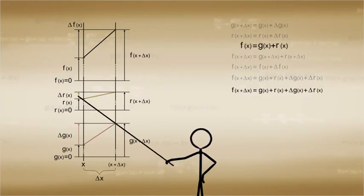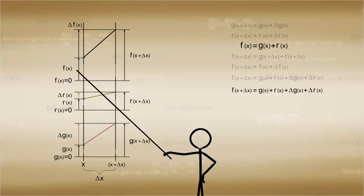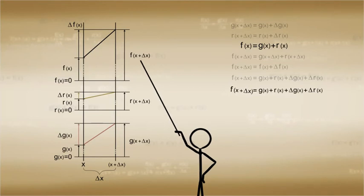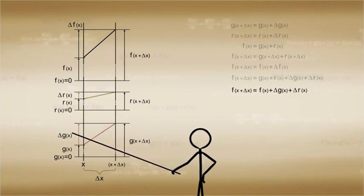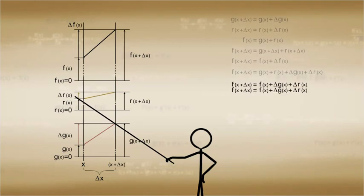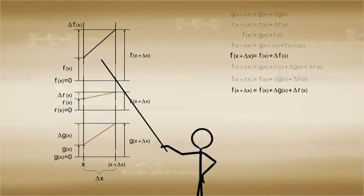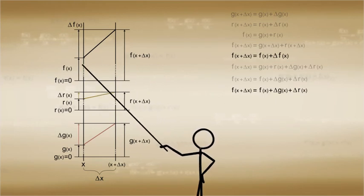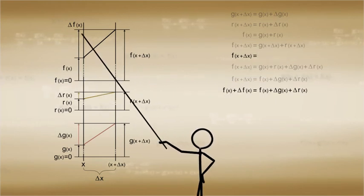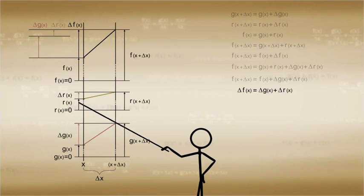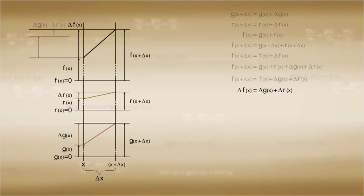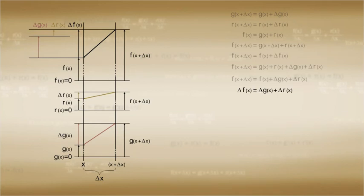Since we know that g of x plus r of x is actually equal to f of x, we can say that f of x plus delta x is equal to f of x plus delta g of x plus delta r of x. Since by definition f of x plus delta x is equal to f of x plus delta f of x, we can rearrange and say that delta f of x is actually equal to delta g of x plus delta r of x. That is to say, the small vertical change in the sum function f of x is equal to the sum of the two small vertical changes in the functions g of x and r of x.